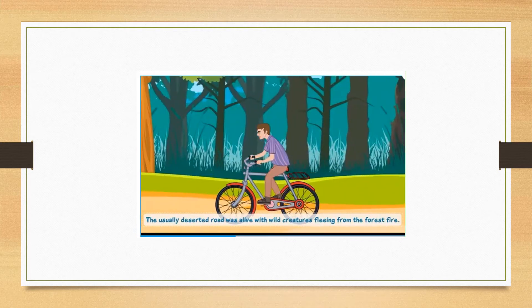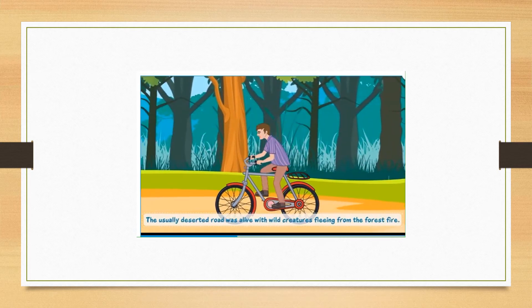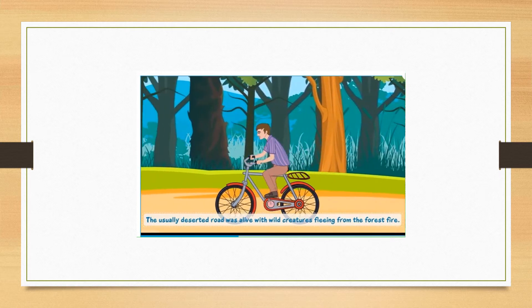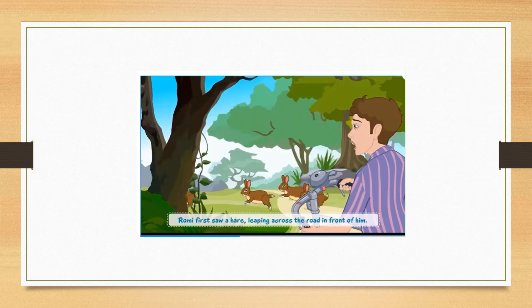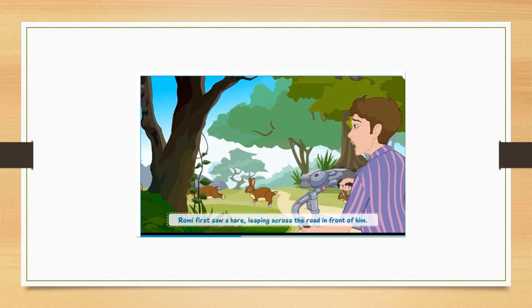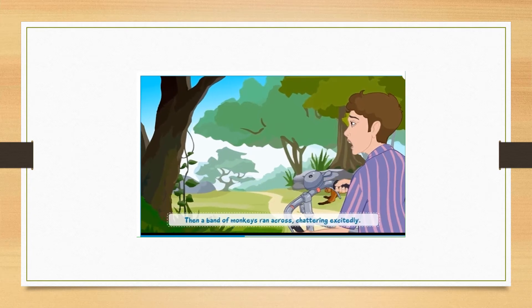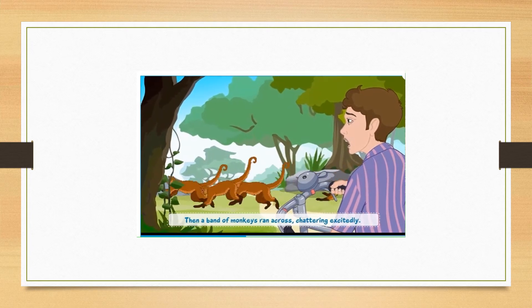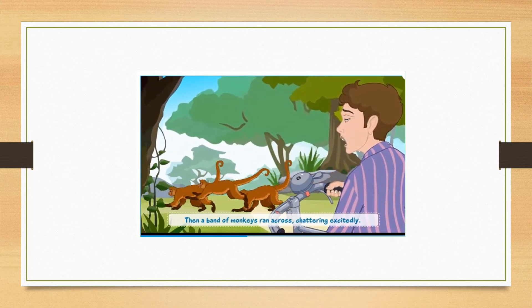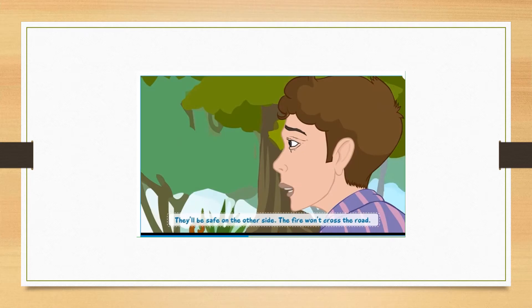The usually deserted road was alive with wild creatures fleeing from the forest fire. Romy first saw a hare leaping across the road in front of him. It was followed by several more hares. Then a band of monkeys ran across, chattering excitedly. They'll be safe on the other side. The fire won't cross the road.